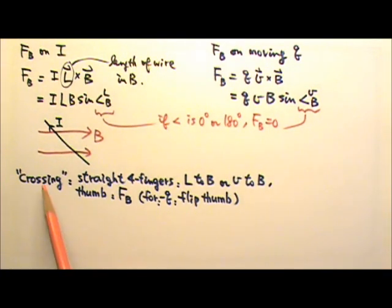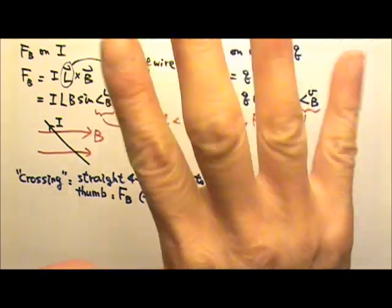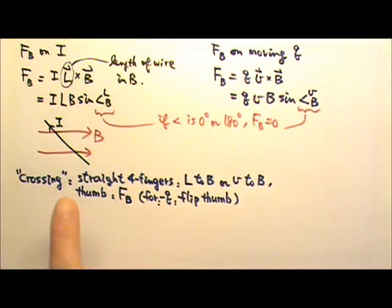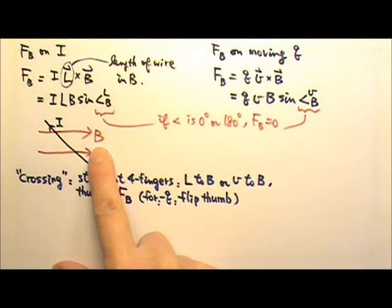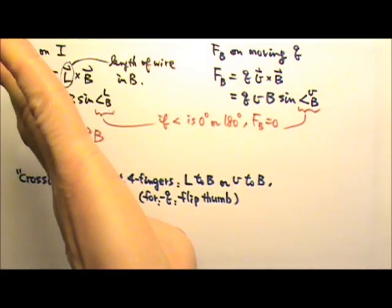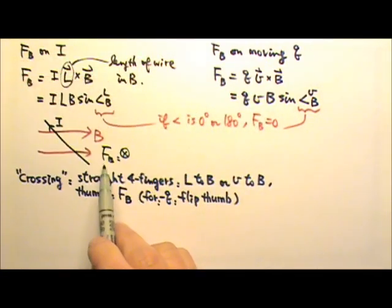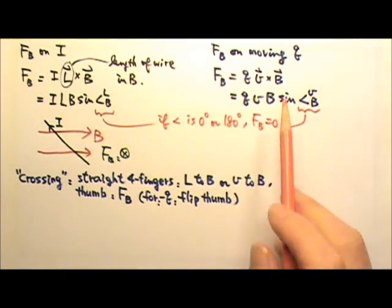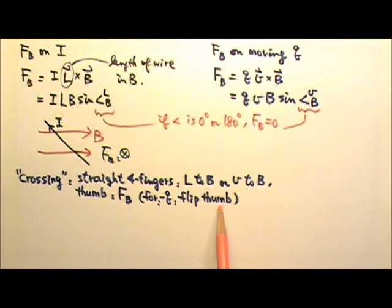If the magnetic force is not zero, we can use the right-hand rule to determine its direction. We use the straight four fingers to do the crossing, and the thumb gives us the direction of the magnetic force. For example, if a straight current goes one way inside a magnetic field pointing to the right, we start our four fingers in the direction of L, bend them toward B, and the thumb points into the paper — that's the force direction. For a negative charge, we need to flip the thumb direction to get the correct magnetic force.